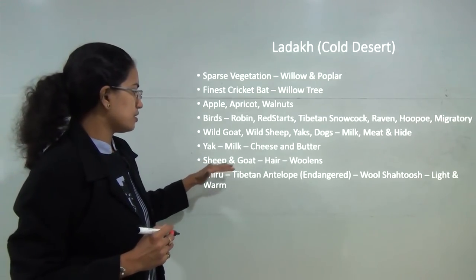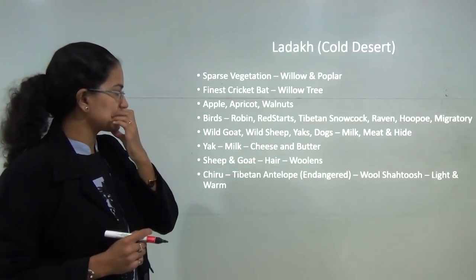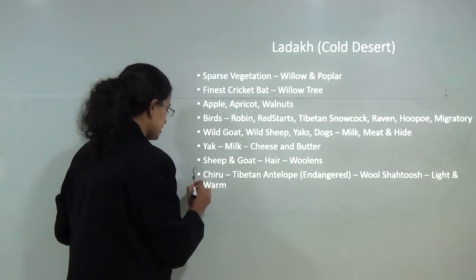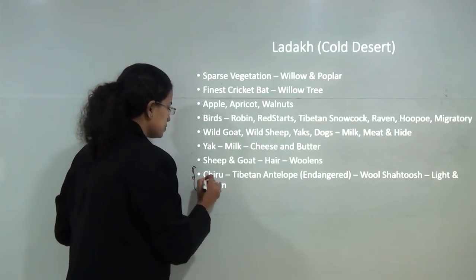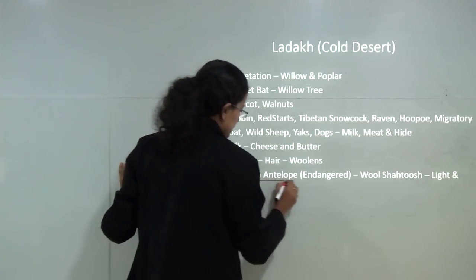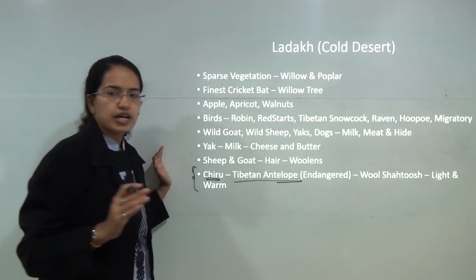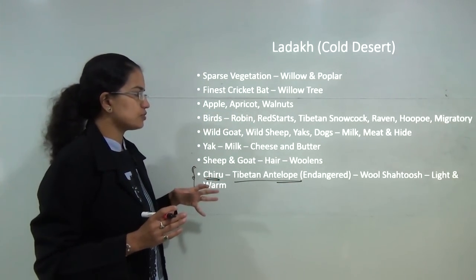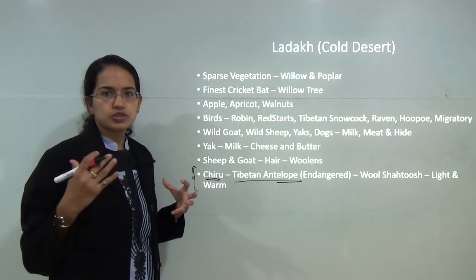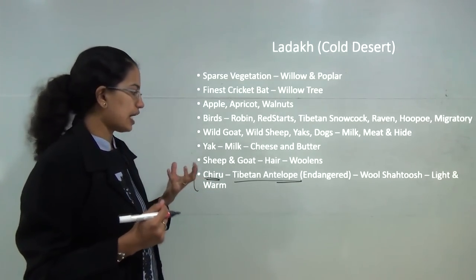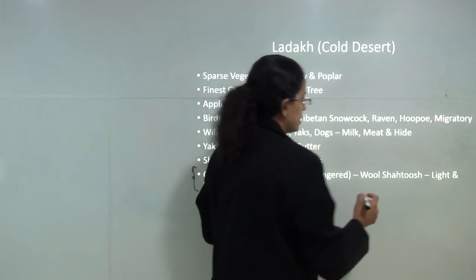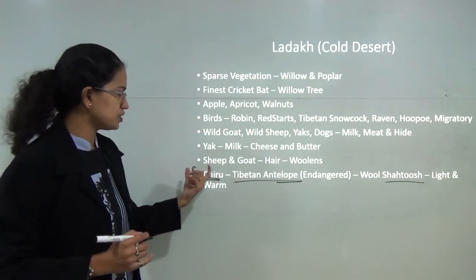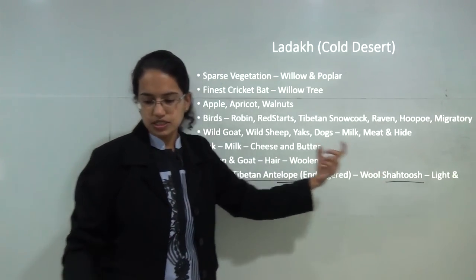The sheep and goats are used for the production of woolen clothes. One unique example here is the chiru, also known as the Tibetan antelope. It is now an endangered animal. The wool from the chiru is used to produce woolen clothes that are very light and warm, and this wool is known as shahtoosh.